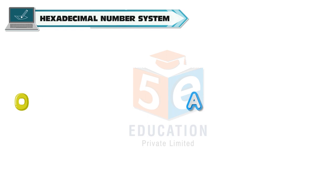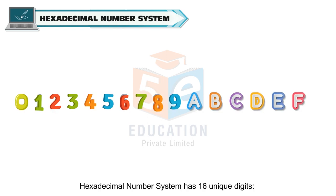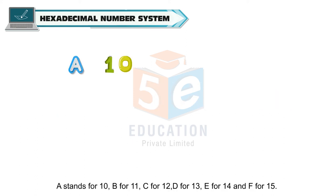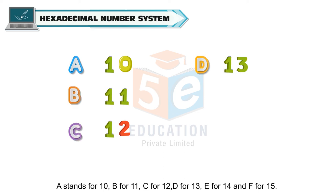Hexadecimal number system. Hexadecimal number system has 16 unique digits. Ten are the digits from 0 to 9. In addition, there are the letters A, B, C, D, E, and F. A stands for 10, B for 11, C for 12, D for 13, E for 14, and F for 15.